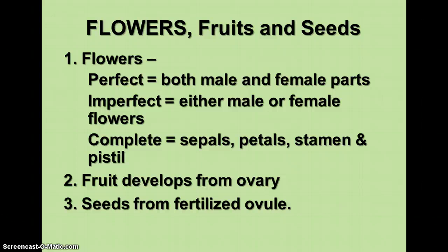The fruit develops from the ovary. Many things you don't think of as fruits actually are fruits botanically — things like tomatoes and avocados — because they are the ripened ovary containing the seeds. In botany, the study of plants, fruit has a different connotation than in everyday food usage, so dismiss the notion that fruits have to be sweet and edible. We'll look at different kinds of fruits and seeds as we go through this unit.